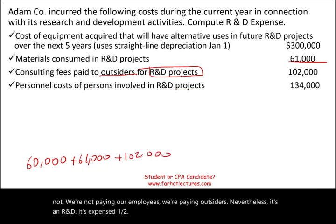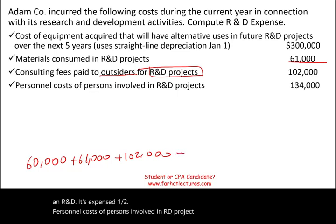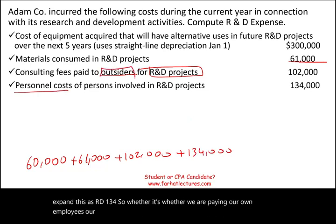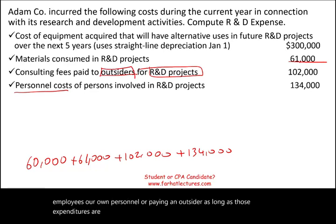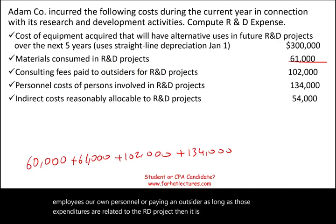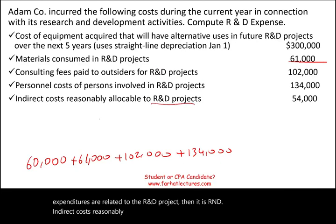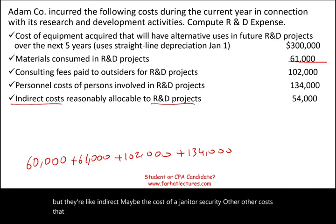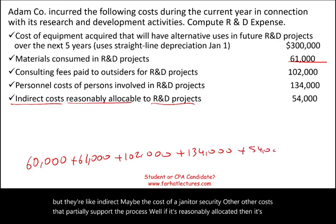Personnel costs of persons involved in an R&D project — of course, we are going to expense this as R&D: $134,000. Whether we are paying our own employees and personnel or paying an outsider, as long as those expenditures are related to the R&D project, it is R&D. Indirect costs reasonably allocated to R&D — these costs are not direct but are indirect, like the cost of a janitor or security, other costs that partially support the process. If it's reasonably allocated, then it's R&D: plus $54,000.